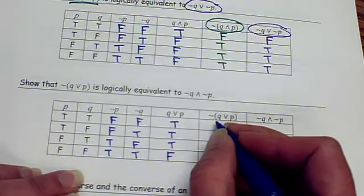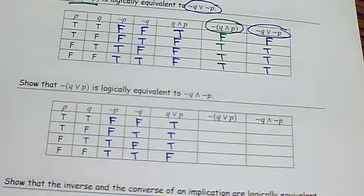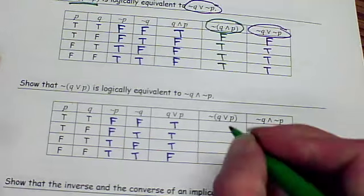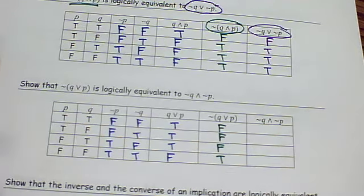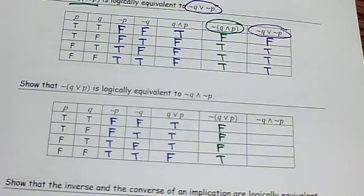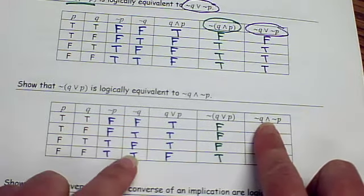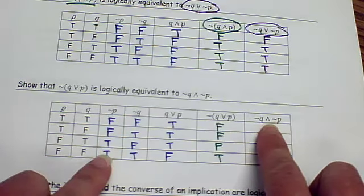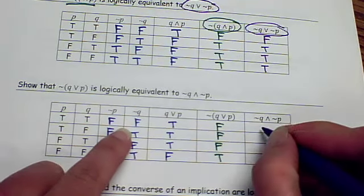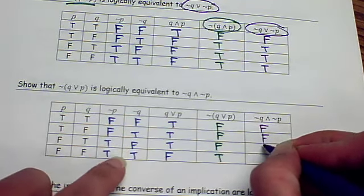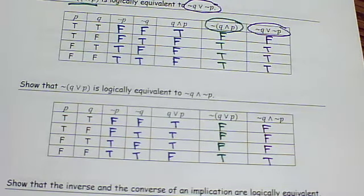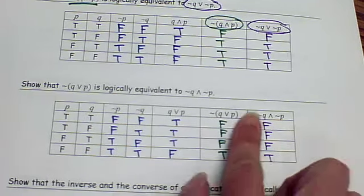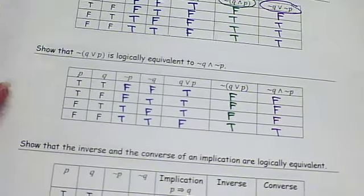Now not Q or P means I'm going to take each of those and negate them. False, false, false, true. Now the last column tells me to take not Q and not P. So remember, that's only when they're both true. False, false, false, true. Are these equivalent? Yes. How do you know? All the trues and falses match up.